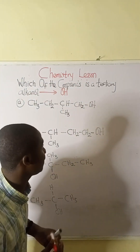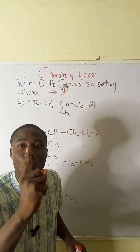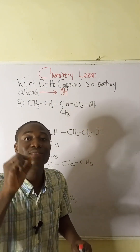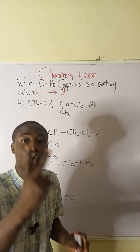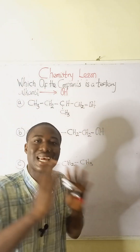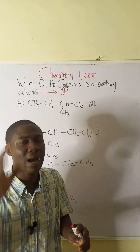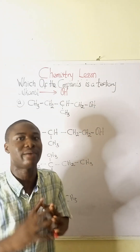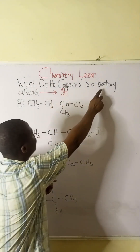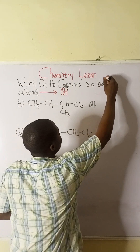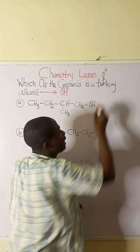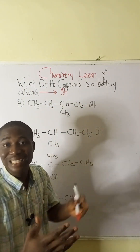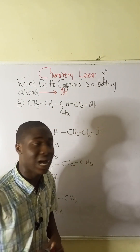If that carbon atom is attached to just one carbon directly, it is a primary alkanol. If that carbon atom is directly attached to two carbons, it is a secondary alkanol. And if the carbon atom that bears the OH is directly attached to three carbon atoms directly, it is a tertiary alkanol. This must be noted.